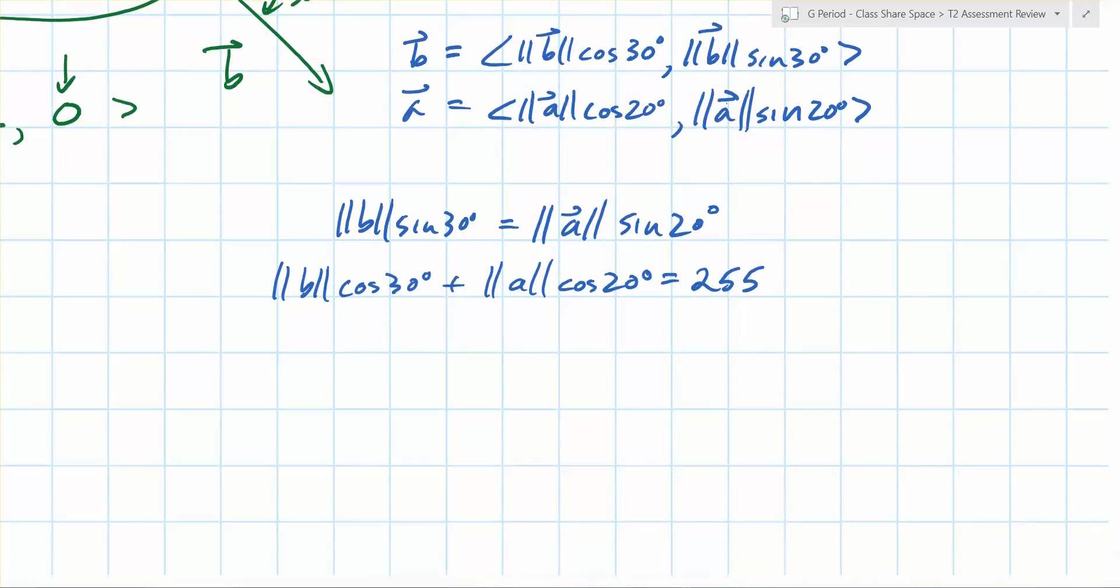There you go. So how many equations do you have right there? Two. How many variables? Two. You'll need your calculator to do this. That's how you do it. Does that make sense? Yes.